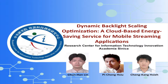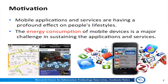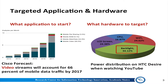This work explores how to minimize the energy consumption of the backlight when displaying a video stream without adversely impacting the user's visual experience. Reducing the energy consumption of mobile devices has been a major challenge in sustaining mobile applications. Cisco forecasts that video streaming will account for 66% of mobile traffic by 2017. When a video is displayed, the backlight used to illuminate the display subsystem consumes most of the energy.